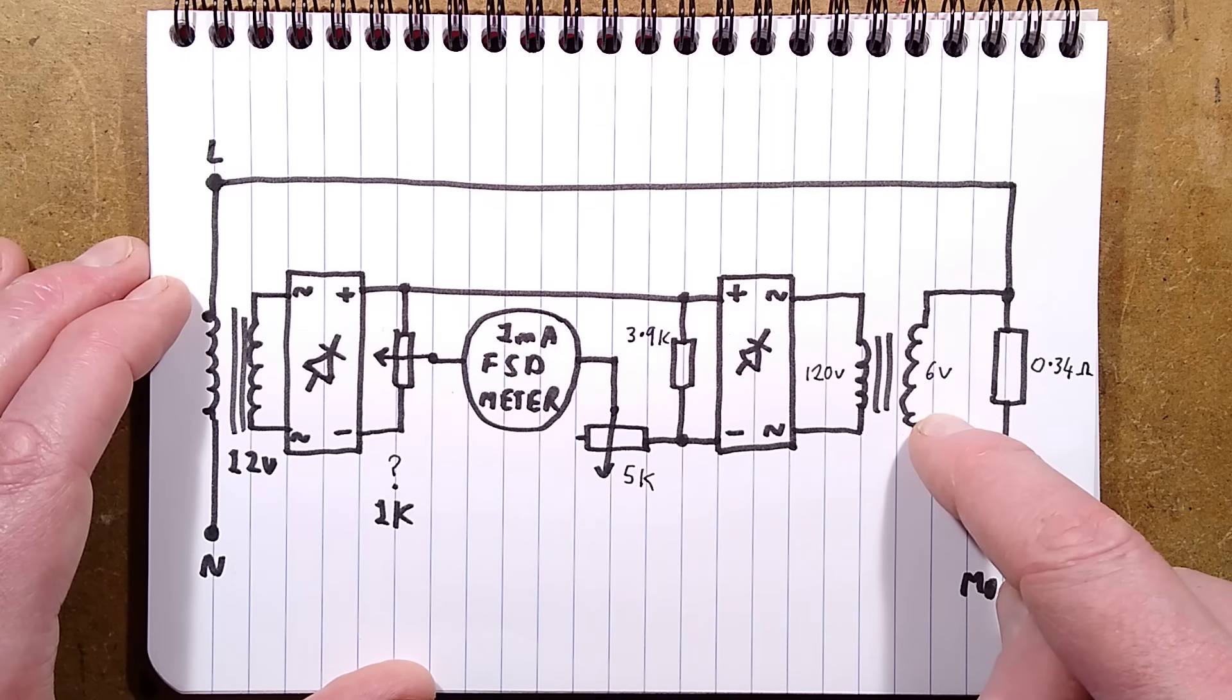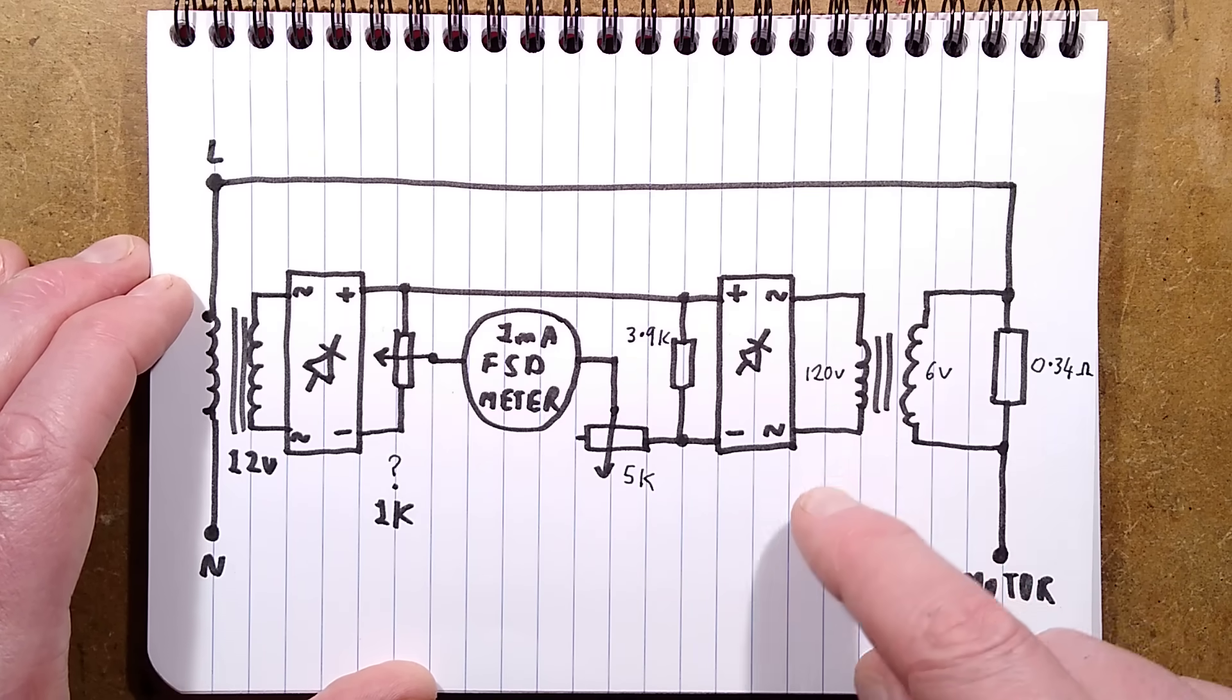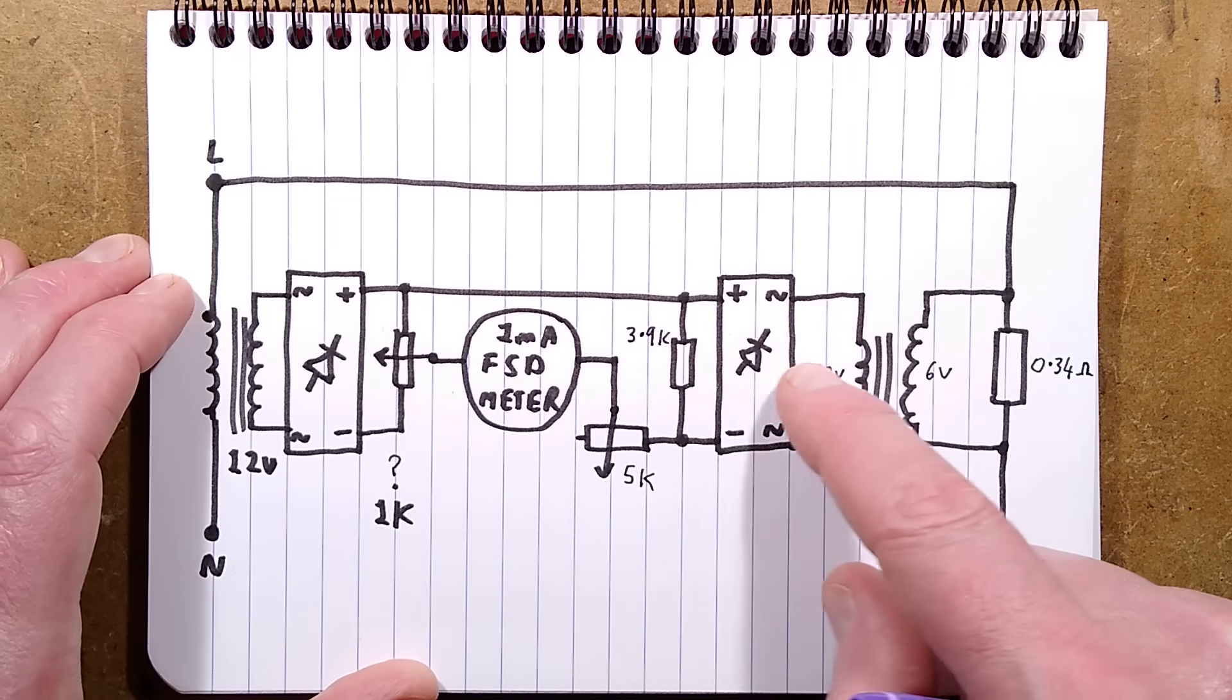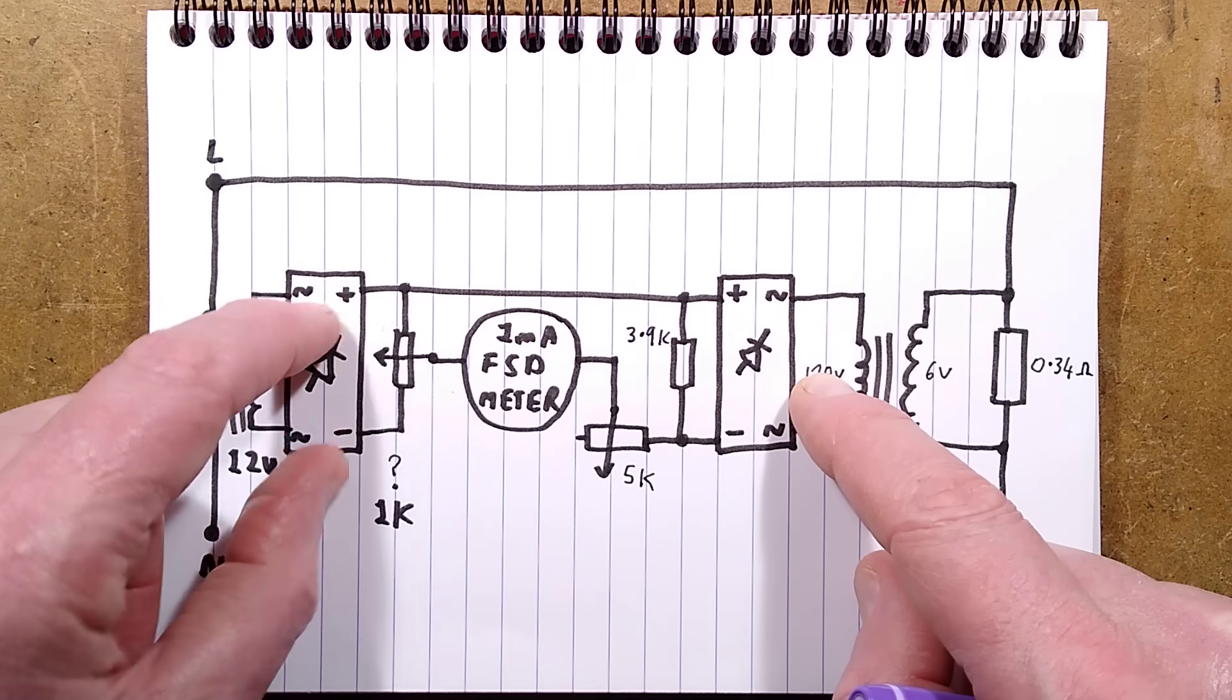This time they've just used a single one of the 6-volt windings, and then they've paralleled up the 220-volt windings. So that will basically provide an amplified voltage back to the secondary side here that is then compared to this voltage.